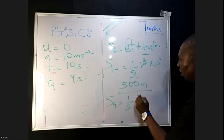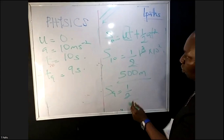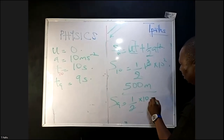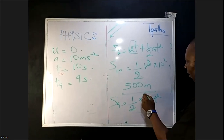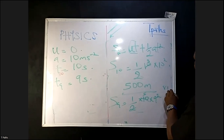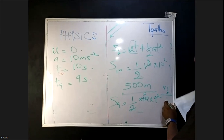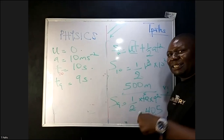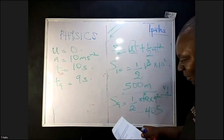Now the distance covered in 9 seconds: S₉ = ½ × 10 × 9². Half of 10 is 5, and 9² is 81. So 5 × 81 = 405 meters. The distance covered in 9 seconds is 405 meters.